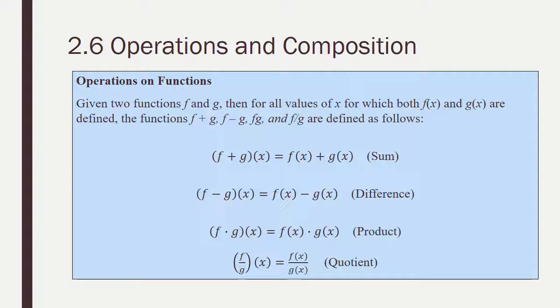So what we're saying here is when you have f plus g of x, what you're doing is you're taking f of x and adding g of x to it. f minus g of x means to take f of x and subtract g of x. f times g of x means to multiply the two functions together, and f over g of x means to divide the two functions.